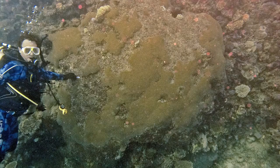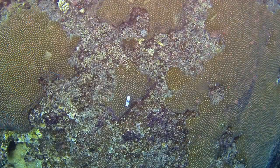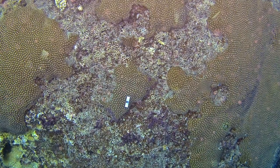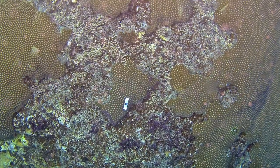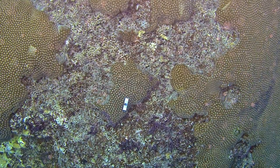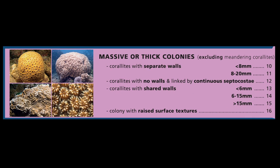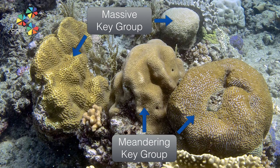This Diploastria colony has been affected by either crown-of-thorns starfish or coral bleaching. With time underwater, you will learn to recognise the complex ecological life histories reef species have had. Now, inspect the massive or thick colony key group on the front page of your coral finder. Note how it specifically excludes corals with meandering coralites, which have their own key group. So by this reasoning, of the four corals shown here, we would pursue two using the massive key group, and the other two using the meandering key group.